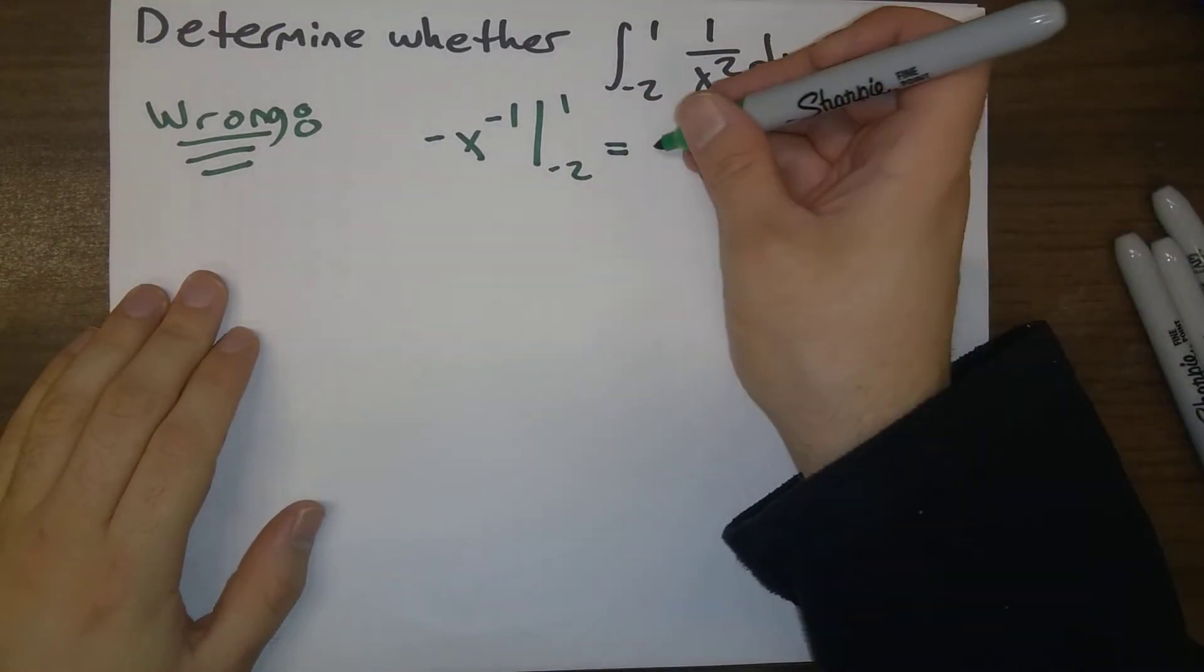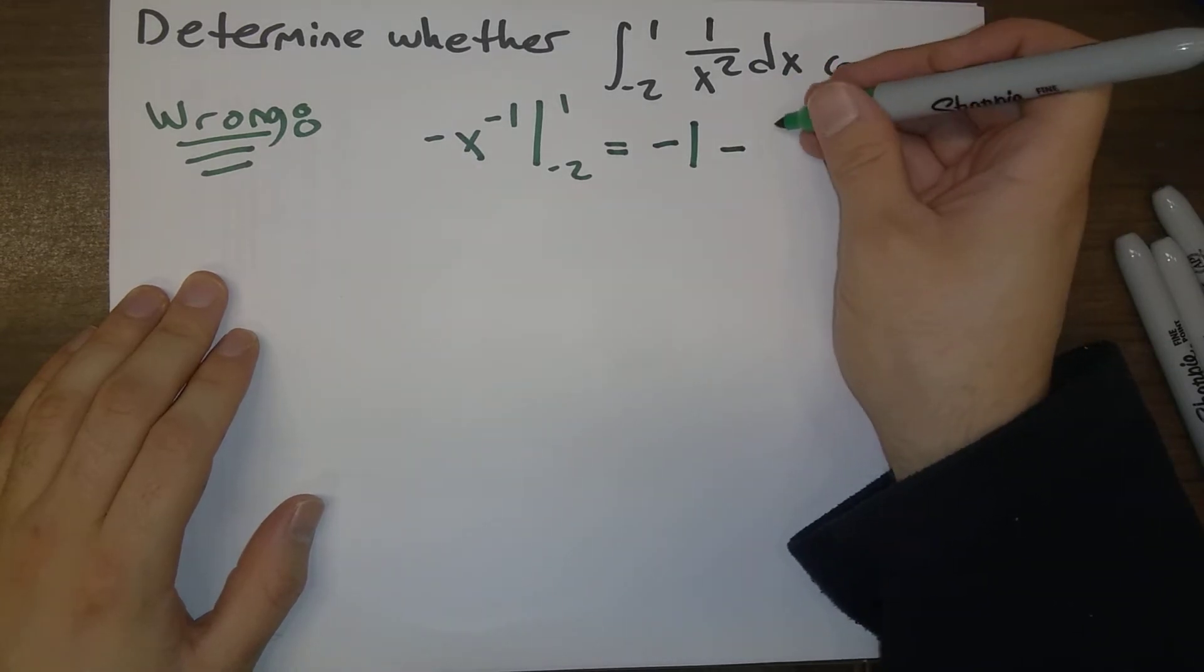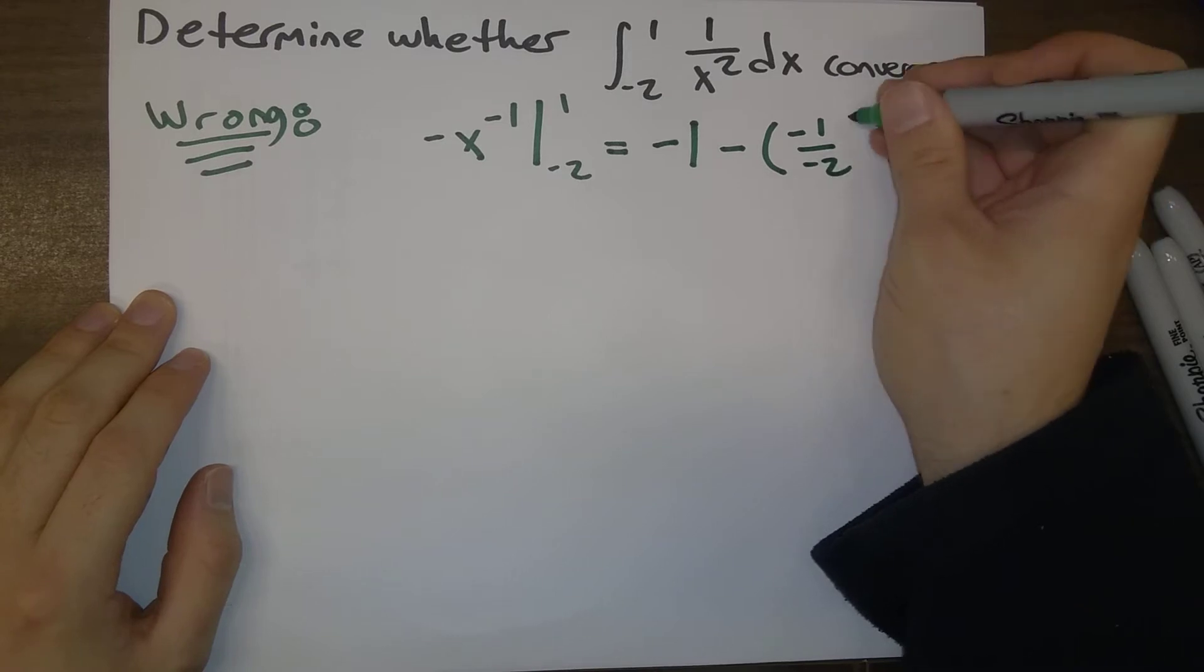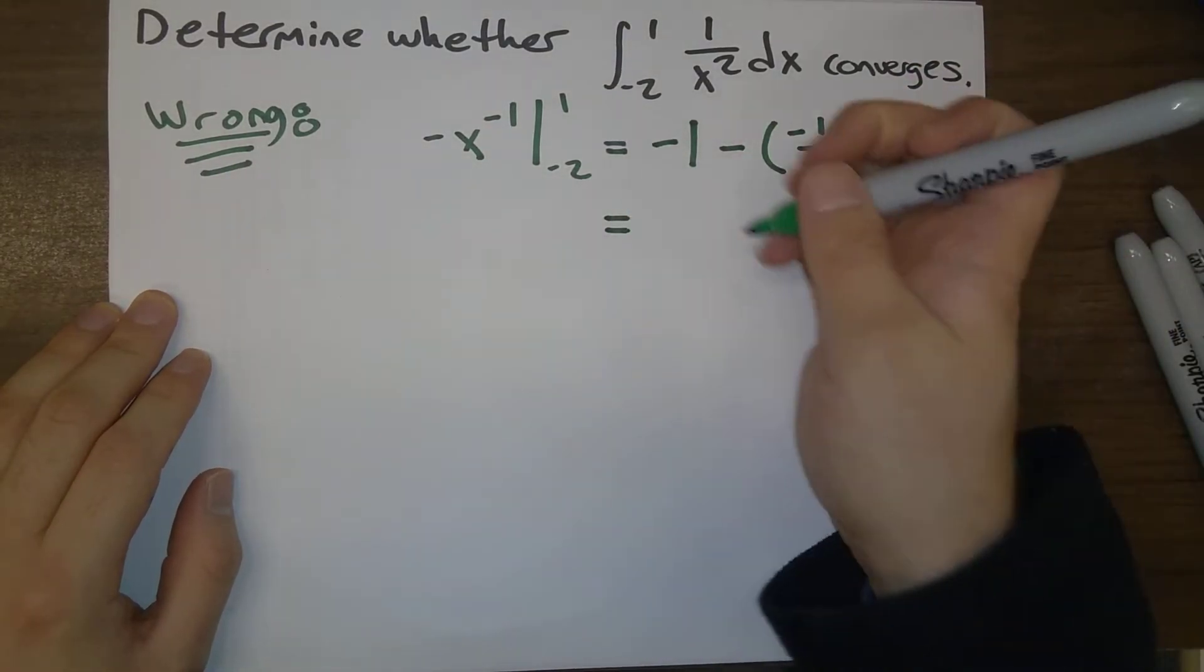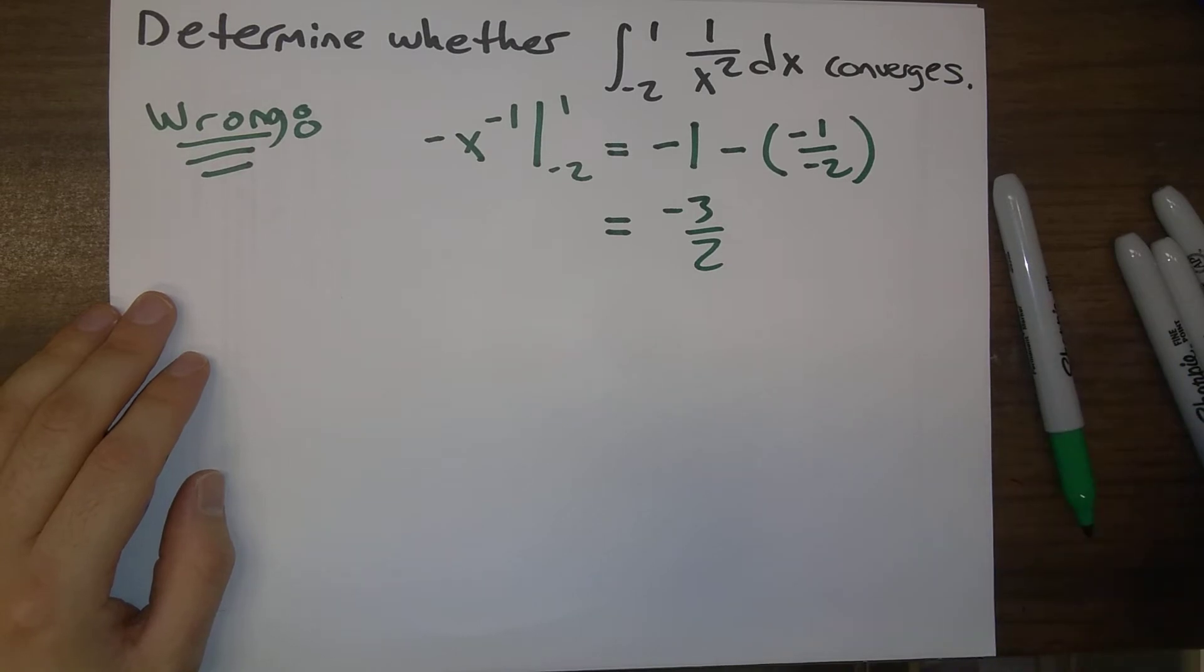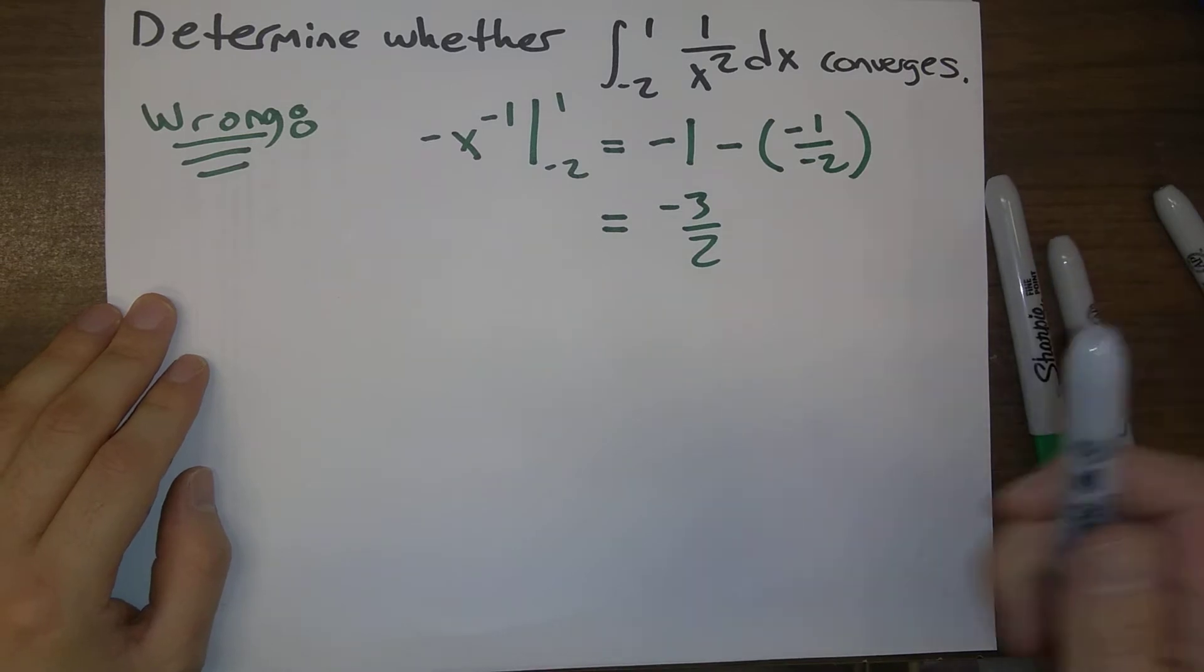And when we plug in 1, we get minus 1. And when we plug in minus 2, we get minus 1 over minus 2. And combining this together, keeping track of all the negative signs, we get minus 3 halves. So a wrong solution would be just showing this much work and saying it's minus 3 halves.